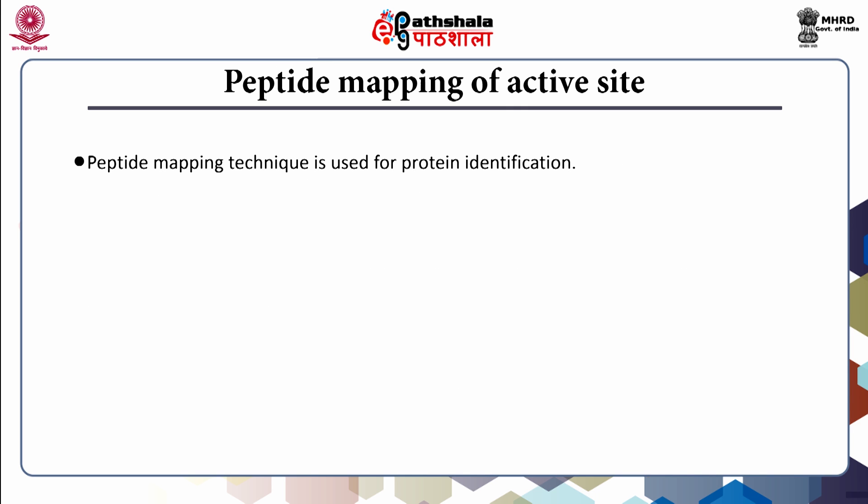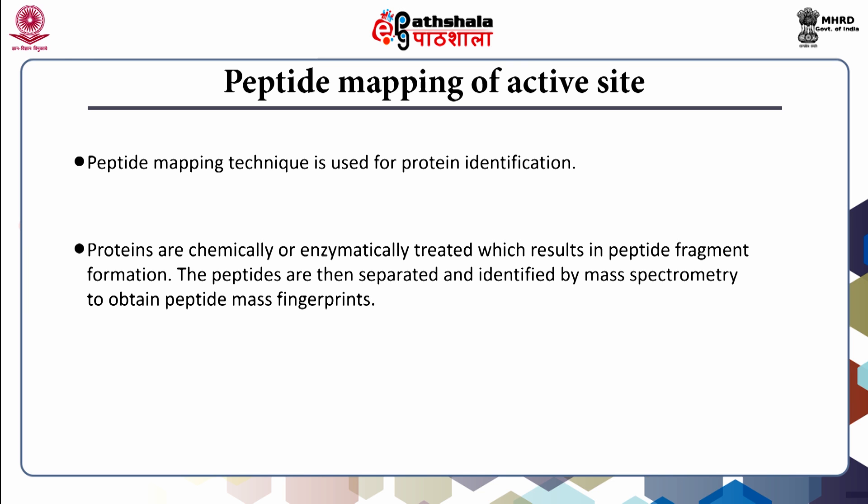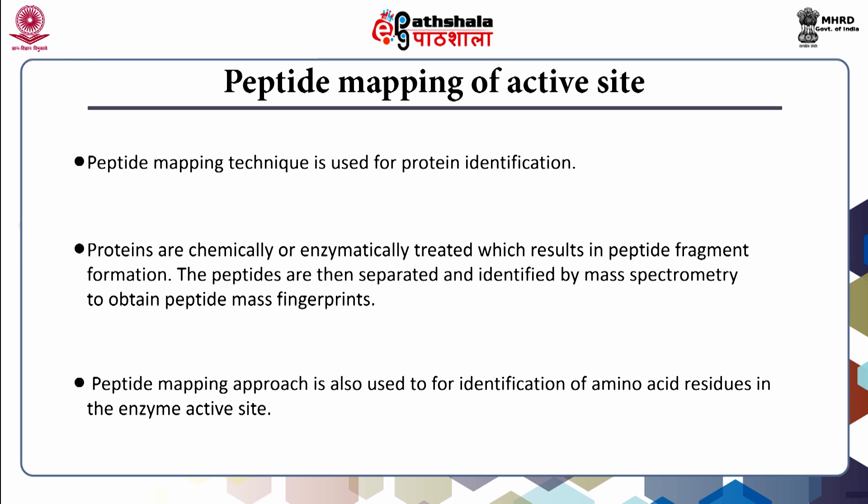The peptide mapping technique is used for protein identification. In this approach, proteins are chemically or enzymatically treated, which results in peptide fragment formation. The peptides are then separated and identified by mass spectrophotometry to obtain peptide mass fingerprints. The peptide mapping approach is also used for the identification of amino acid residues in the enzyme active site.